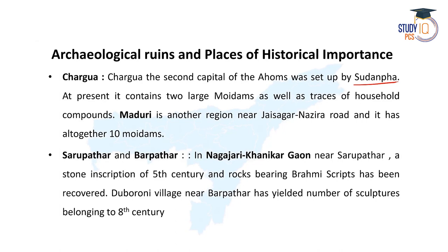Then comes Khorupathar and Borupathar in Golaghat district, which are also historically important places. In the Nogajori Khanikargaon village near Khorupathar, a stone inscription of the 5th century was found, and rocks bearing Brahmi script have also been discovered. The Duboroni village near Borupathar has yielded some sculptures which belong to the 8th century. These are particularly related to the ancient history of Assam.